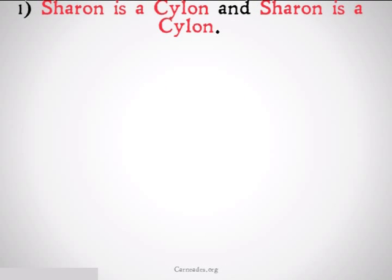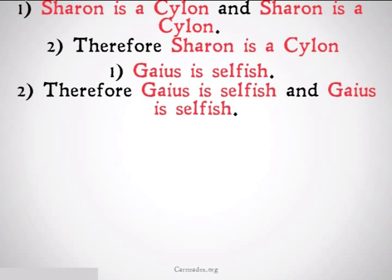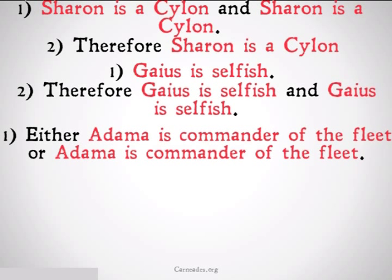Sharon is a Cylon, and Sharon is a Cylon. Therefore, Sharon is a Cylon. Gaius is selfish. Therefore, Gaius is selfish, and Gaius is selfish.